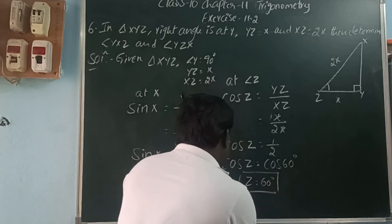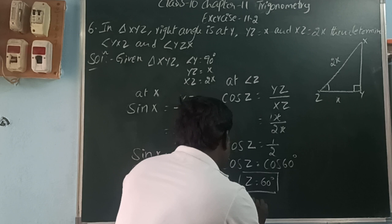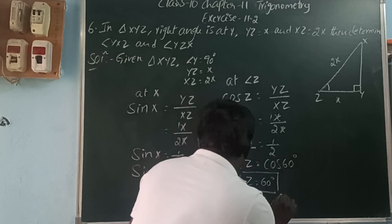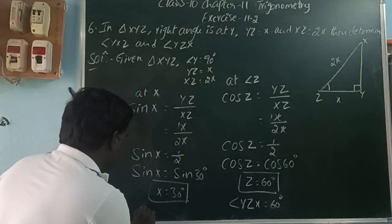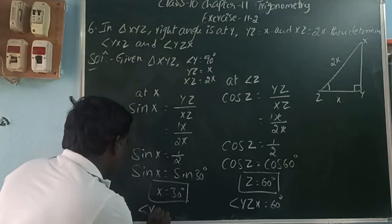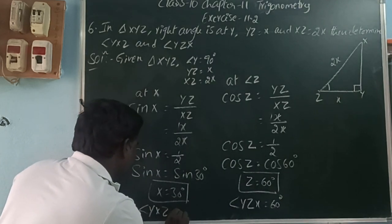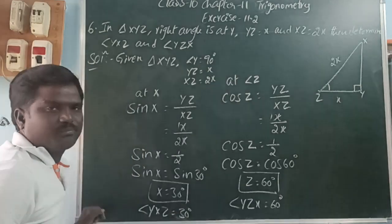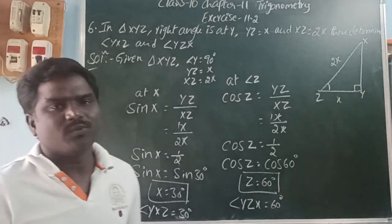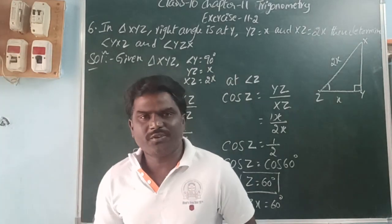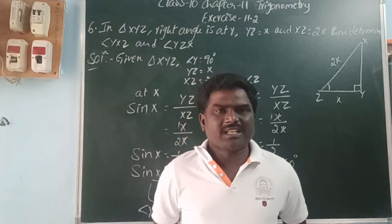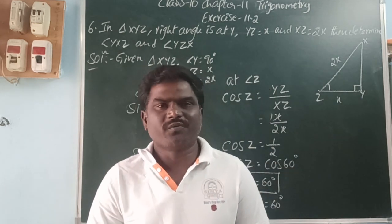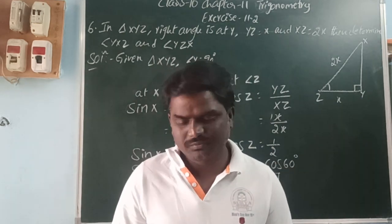So angle YZX is equal to 60 degrees, and angle YXZ is equal to 30 degrees. Thank you for watching my videos. Please subscribe to our YouTube channel and share it with your friends. Thank you.